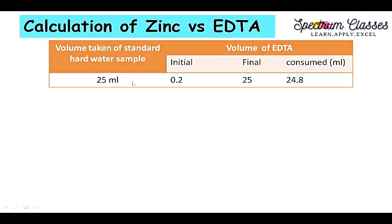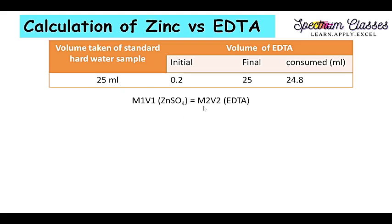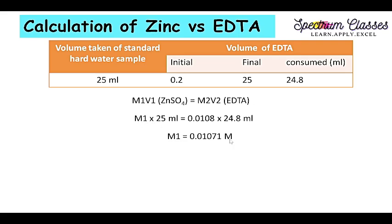From the lab activity we have seen that 25 ml of zinc sulfate solution requires 24.8 ml of M/100 EDTA solution. Now for the calculation: using the equation M₁V₁ = M₂V₂, with zinc sulfate on the left and EDTA on the right, I will put in the values. The molarity of zinc sulfate is unknown, volume of zinc sulfate is 25 ml, molarity of EDTA is M/100, and volume of EDTA is 24.8 ml. Using these values, I calculate the molarity of zinc sulfate solution.